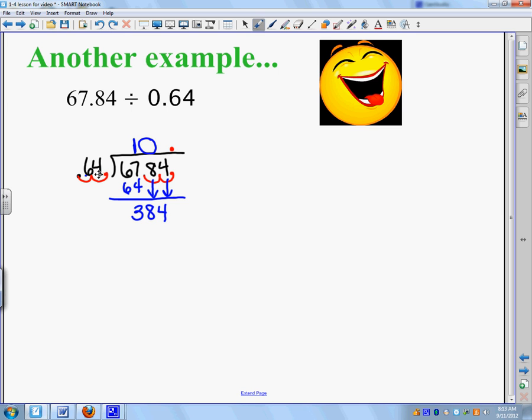I'm going to guess that it's about a 6, because 6 times 6 is 36, and that would be about 360. So, let's guess a 6, and we'll go over here. 64 times 6 is 24, and then 6 times 6 is 36, plus 2 is 384. Perfect. So, my answer is 106.